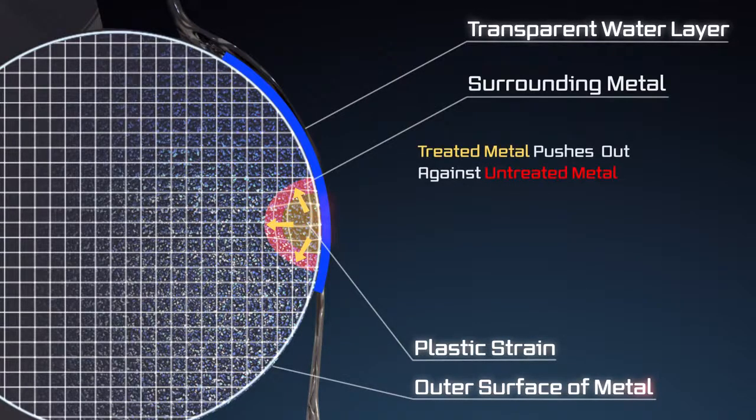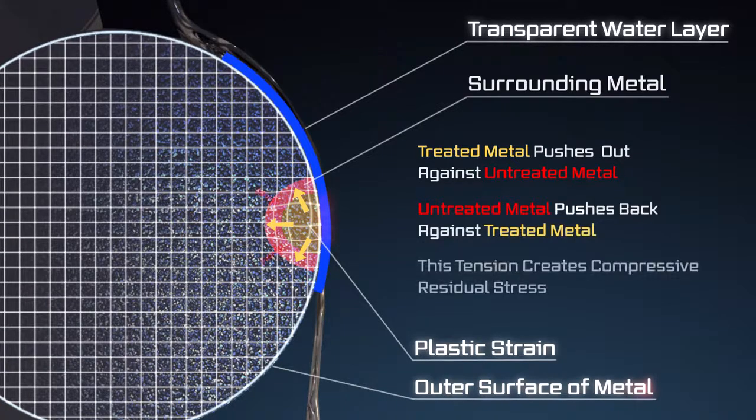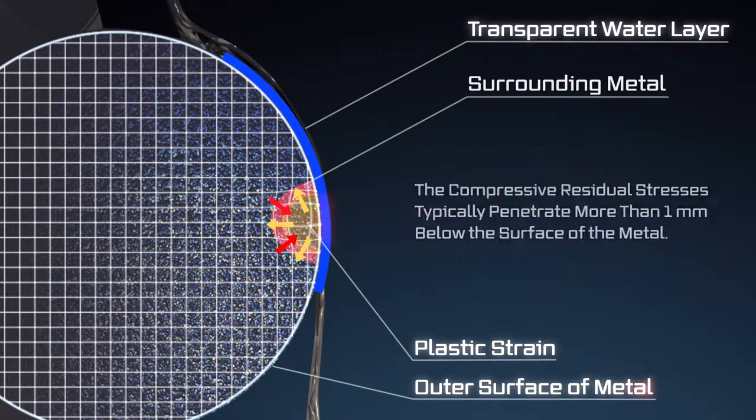also pushes back against the laser peened segment of the metal. The tension between these two forces creates beneficial compressive residual stresses that prevent metal fatigue. The resulting compressive residual stresses typically penetrate more than one millimeter below the surface